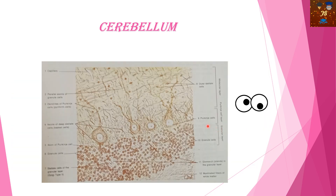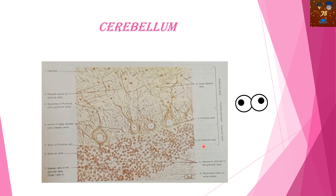Here is how the Purkinje cells look — you can surely identify them under the high power objective of the microscope. These are the granule cells, which have close association with the Purkinje cells. These are the outer stellate cells in the molecular layer. The middle layer is the Purkinje cell layer, and the innermost is the granular layer containing the granule cells — this is one fold.